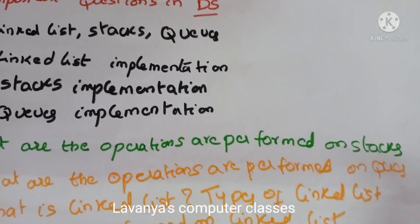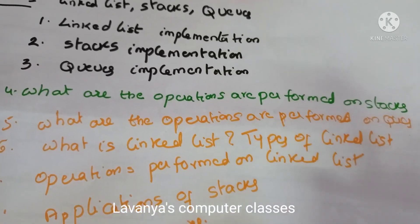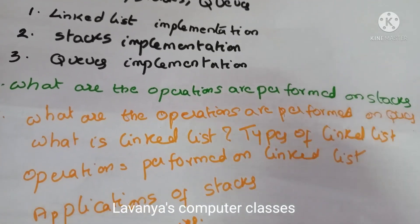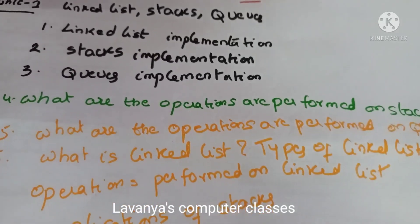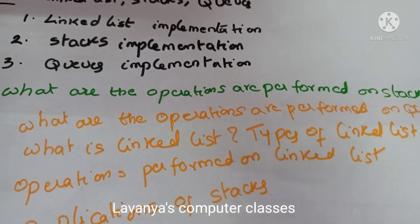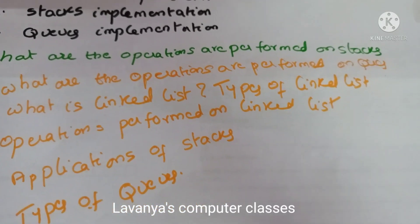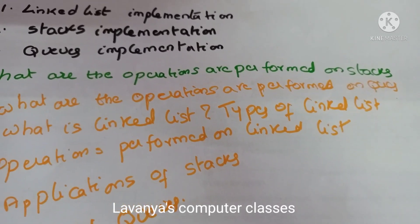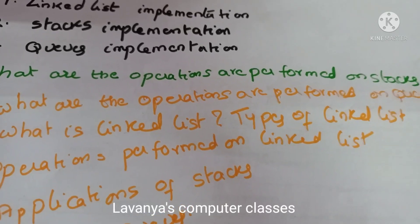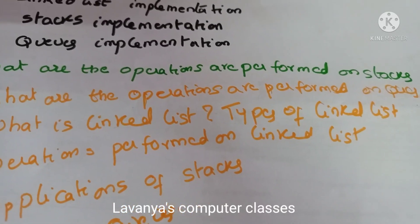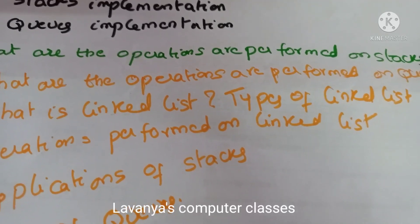So what are the unit 1 questions? First, you have to write the three topic implementations: linked list implementation, write a program to implement a linked list, or write a program for all operations on stacks, write a program for operations on queues. After that, theory questions: what are the operations performed on stacks and queues, what is a linked list, and types of linked list — single linked list, double linked list, circular linked list.